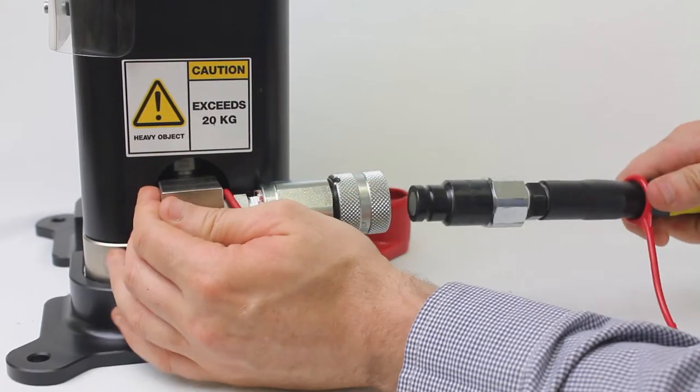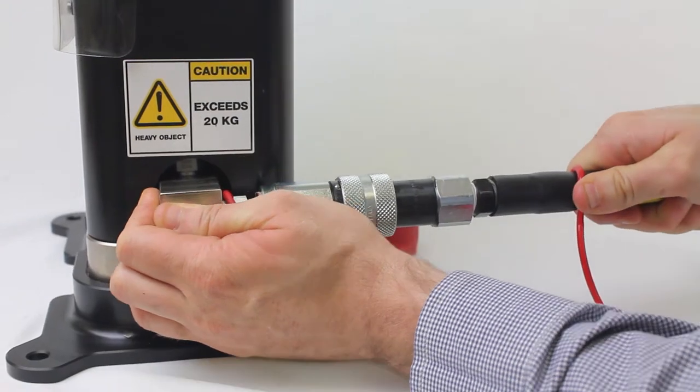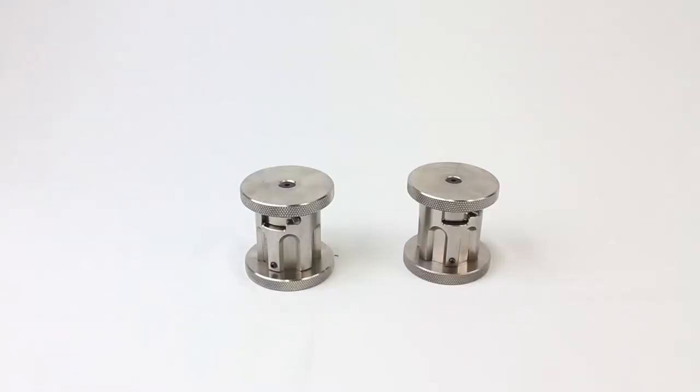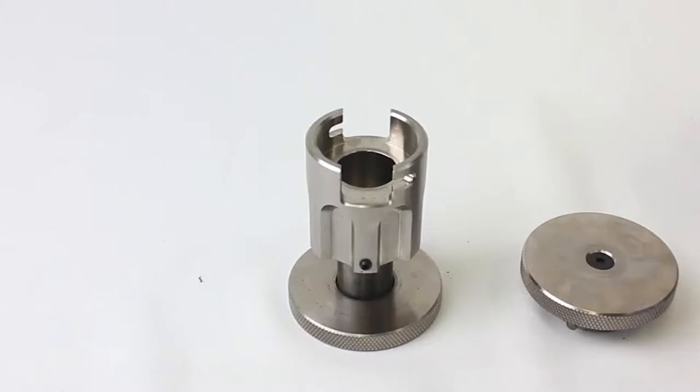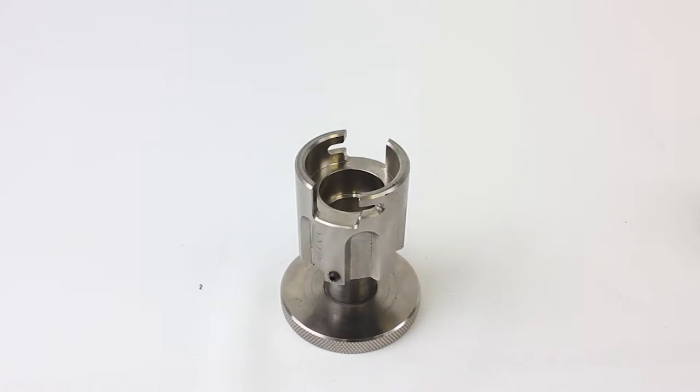The dies can be identified by removing the cap and observing the die body. The standard die will have a smooth cylinder, where the premium die will have a cutout to accommodate a plastic ring.